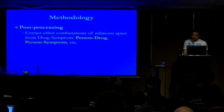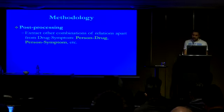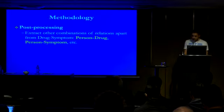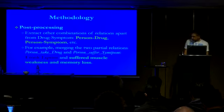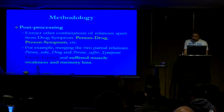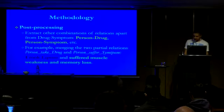Although we are essentially interested in drug-symptom relations, we also extract other combinations referred to as partial relations, such as person-drug or person-symptom. That way, for example, in the sentence "I took Lipitor and suffer muscle weakness and memory loss," we can merge two partial relations — person-take-drug and person-suffer-symptom — into a drug-symptom relation.